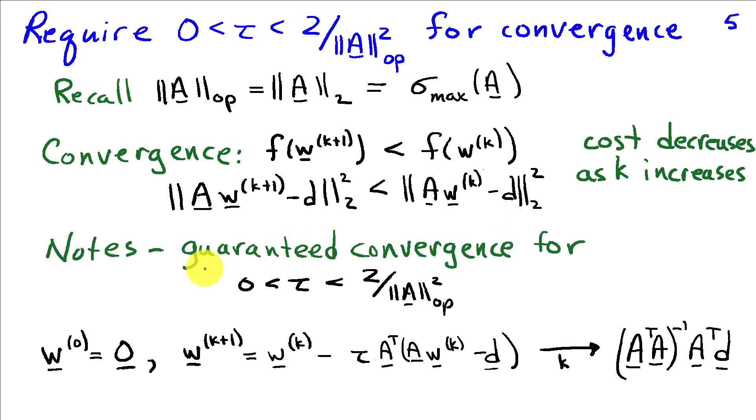This ensures that you're going downhill or you're decreasing the value of the cost function. Well, in the notes that accompany this lecture, I've shown that you can guarantee convergence, in other words, that you're going to continue stepping downhill, provided you restrict tau to lie between 0 and 2 divided by the operator norm squared of the matrix A. So this ensures that if we start at, say, all zeros for convenience, that's a common place to begin your iteration, and we follow this iterative algorithm where w at step k plus 1 is w at step k minus tau times A transpose times the quantity A w at step k minus d, that as k increases, that's going to converge to the least squares solution A transpose A inverse A transpose d.